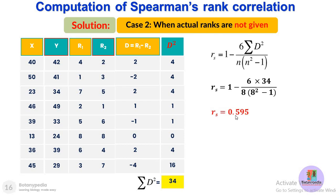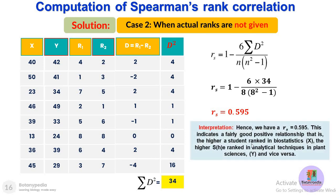rs = 0.595 is nearly close to 0.6. Any value greater than 0.5 shows a fairly good kind of correlation. This indicates a fairly good positive correlation — the higher a student ranked in biostatistics, the higher he or she ranked in analytical techniques in plant sciences, and vice versa.